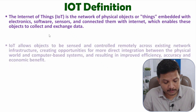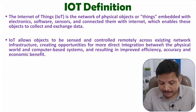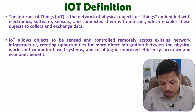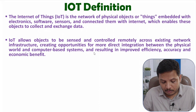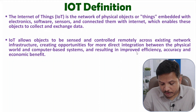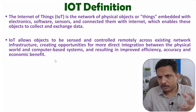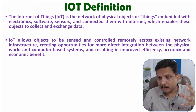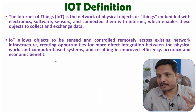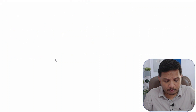Another definition: IoT allows objects to be sensed and controlled remotely across existing network infrastructure, creating more opportunities for direct integration between the physical world and computer-based systems, resulting in improved efficiency, accuracy, and economic benefit. Our agenda is to improve efficiency of objects — with IoT we can control many things from anywhere, without needing to be at that location.